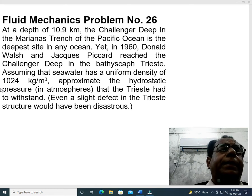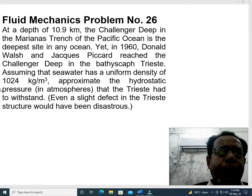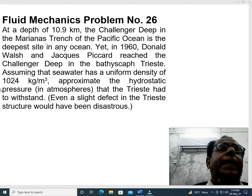Assuming that seawater has a uniform density of 1024 kg per meter cube, approximate the hydrostatic pressure in atmospheres that the Triest had to withstand. Even a slight defect in the Triest structure would have been disastrous.